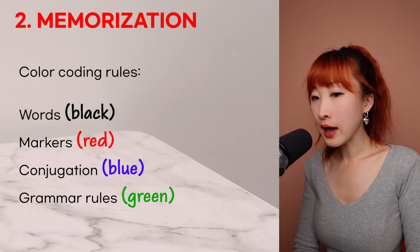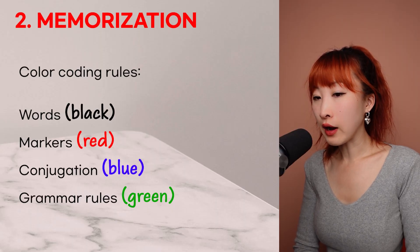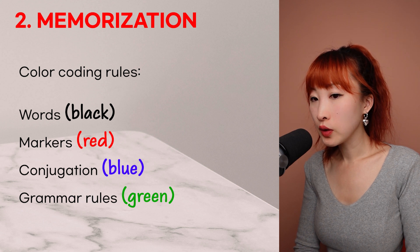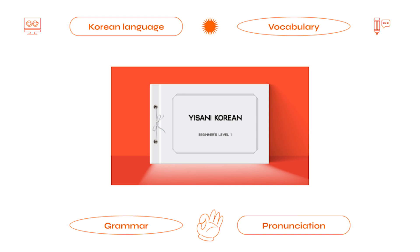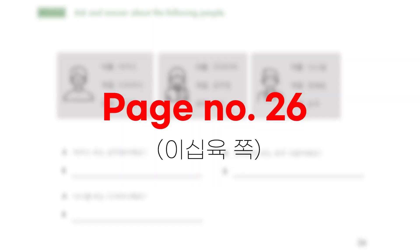Words can be written in black, markers in red, conjugation in blue, and some grammar rules in green. Let's look at the following examples. I opened my textbook page number 26.